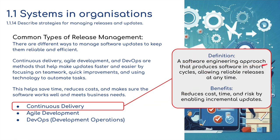Continuous delivery is a software engineering approach that produces software in short cycles, allowing reliable releases at any time. It reduces cost, time, and risk by enabling incremental updates.